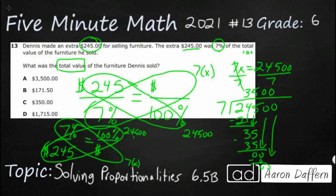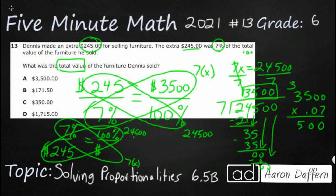But look — A and C are very similar, so how can I double-check? If my full price is $3,500, then 7% of it should be $245. Let's verify: take 3,500 and multiply by 7%, which is the same as seven hundredths, or 0.07. Moving the decimal twice to the left, 7 times 35 is 245. I've got two digits behind the decimal in my factor, so two digits in my product — and that gets me back to $245. Check and check! So the answer is $3,500, choice A.